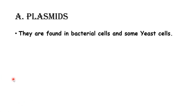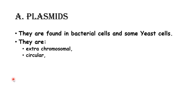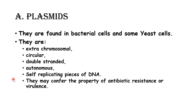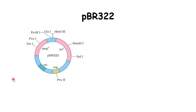Let us discuss about plasmids. Plasmids are found in bacterial cells and in some yeast cells. They are extra-chromosomal, circular, double-stranded, autonomous, self-replicating pieces of DNA. They may confer the property of antibiotic resistance or virulence.